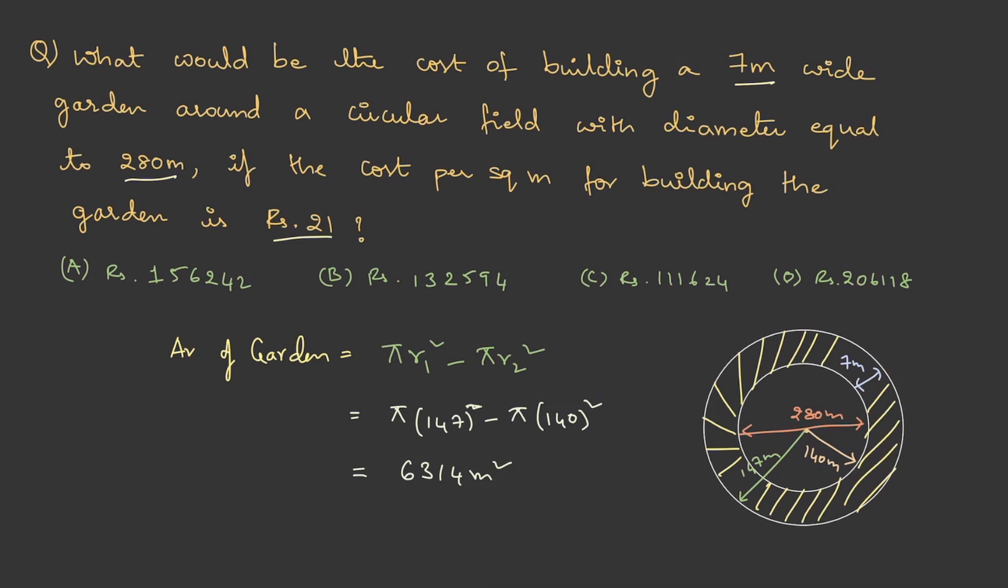We don't need just the area, we need the cost. To calculate the cost, it's ₹21 for every square meter, so multiply this with the area. Therefore, cost = 21 × 6314 = ₹132,594. That is option B. This is a very easy concept, so don't neglect the practice.